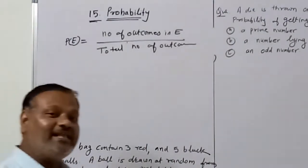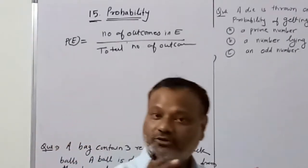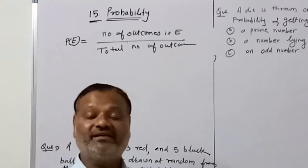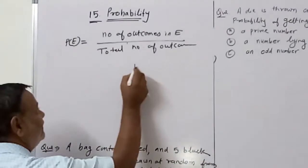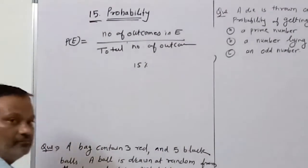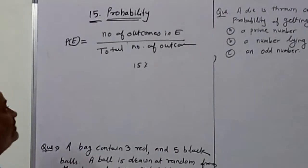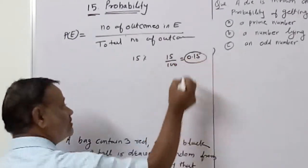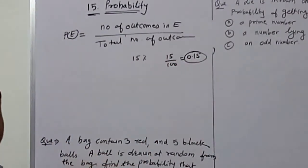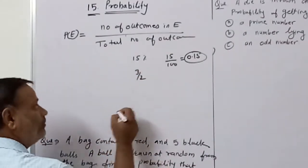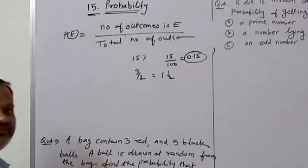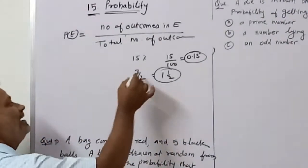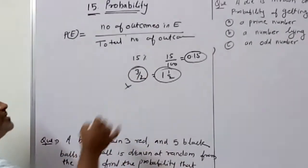Probability always lies between 0 and 1. It is either 0 or greater than 0, and either 1 or less than 1. For example, 15 percent means 15 upon 100 which equals 0.15 - that's possible because it is less than 1. But 3 by 2 is not possible because 3/2 = 1.5, which is greater than 1, so no probability can have that value.